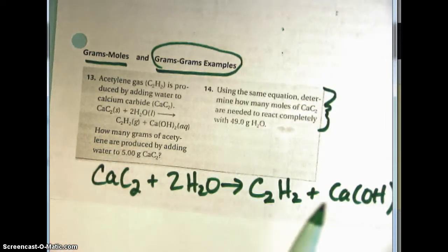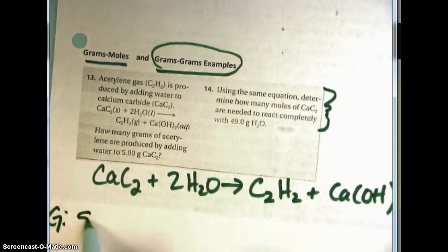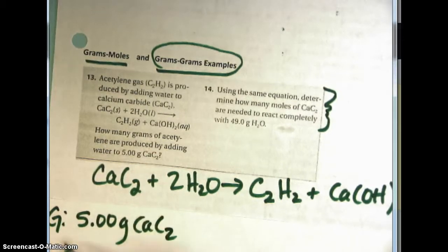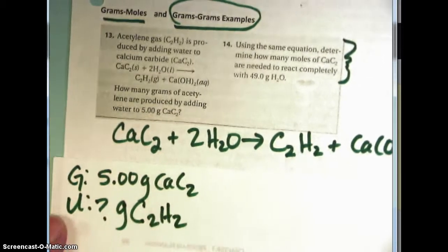So we're going to start with the given and the unknown. 5 grams calcium carbide and how many grams of C₂H₂ which is acetylene gas are produced.